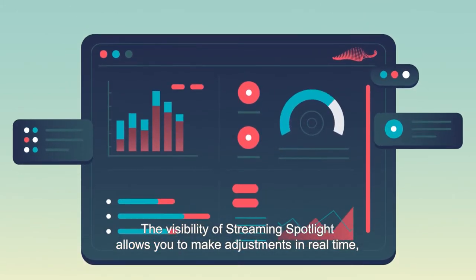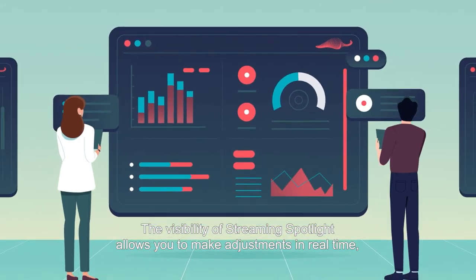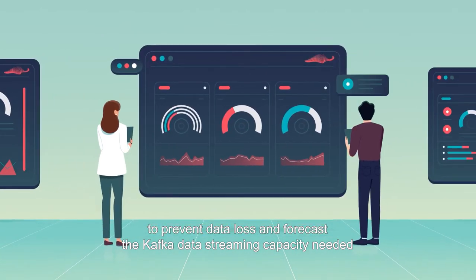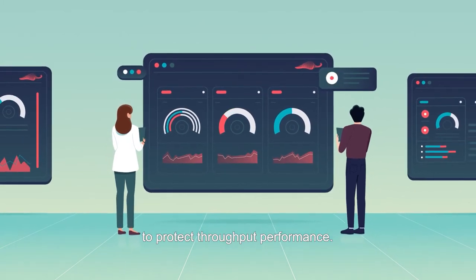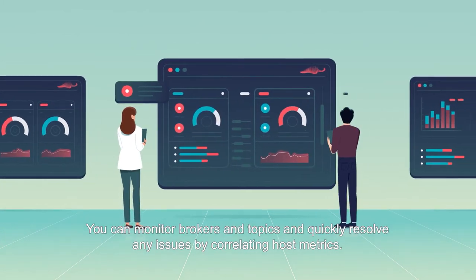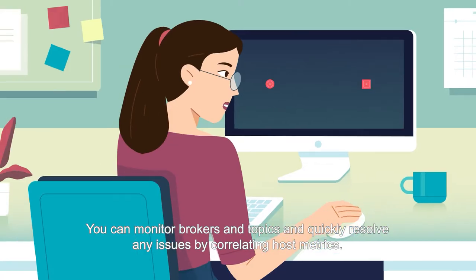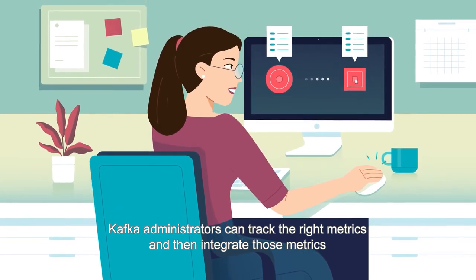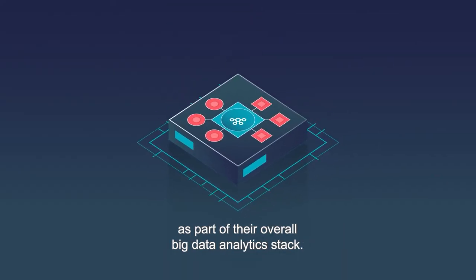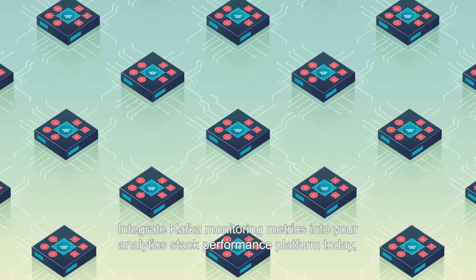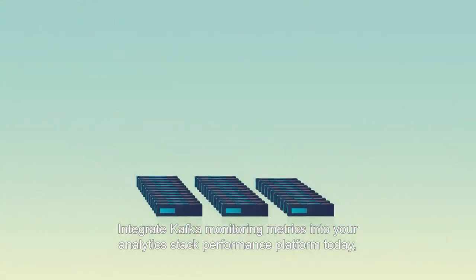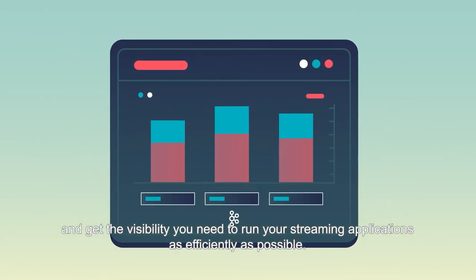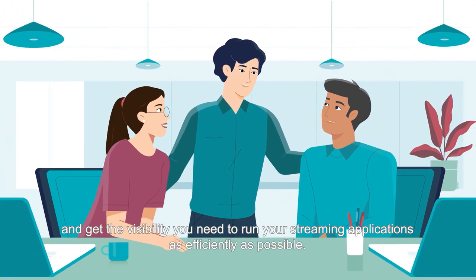The visibility of Streaming Spotlight allows you to make adjustments in real-time to prevent data loss and forecast the Kafka data streaming capacity needed to protect throughput performance. You can monitor brokers and topics and quickly resolve any issues by correlating host metrics. Kafka administrators can track the right metrics and integrate them as part of their overall big data analytics stack. Integrate Kafka monitoring metrics into your analytics stack performance platform today and get the visibility you need to run your streaming applications as efficiently as possible.